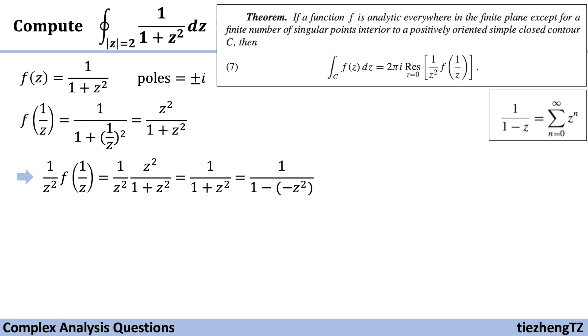We can recall the expansion form 1/(1-x) = Σx^n. We can change the equation into expansion form, which becomes the sum from n=0 to infinity of (-z²)^n, which equals the sum from n=0 to infinity of (-1)^n z^(2n).